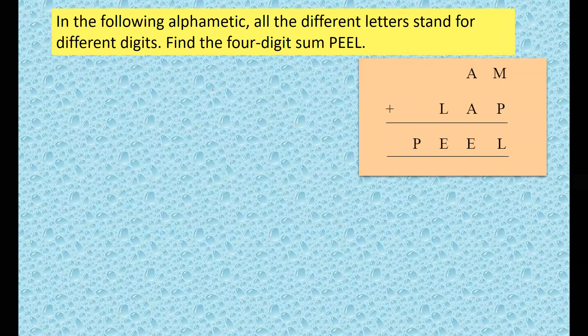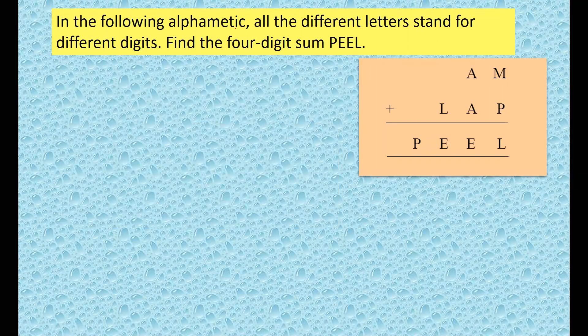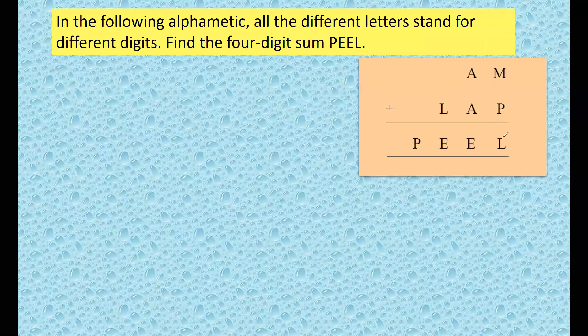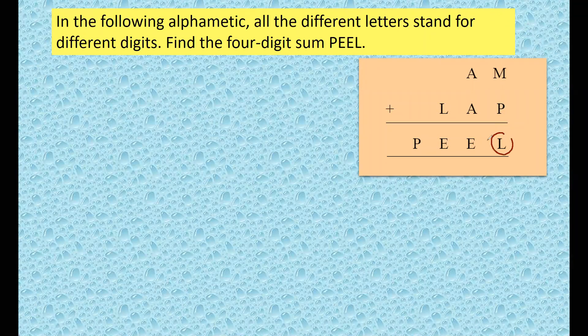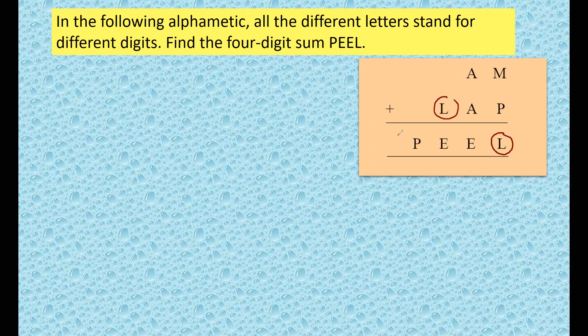So here, this is alphametic. In the following alphametic, all the different letters stand for different digits. Find the four-digit sum PEEL. If you take a look at the question, this is L and here this is L, and these two are zeros. So let's assume that L is one.